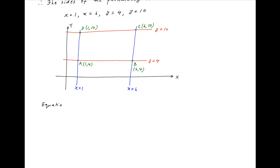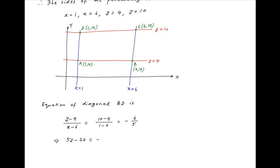Therefore, the equation of diagonal BD is (y − 4) / (x − 6) = (10 − 4) / (1 − 6). The right-hand side simplifies to −6/5. Cross multiplying, we get 5y − 20 = −6x + 36, which can be written as 6x + 5y = 56. This is one of the required answers.